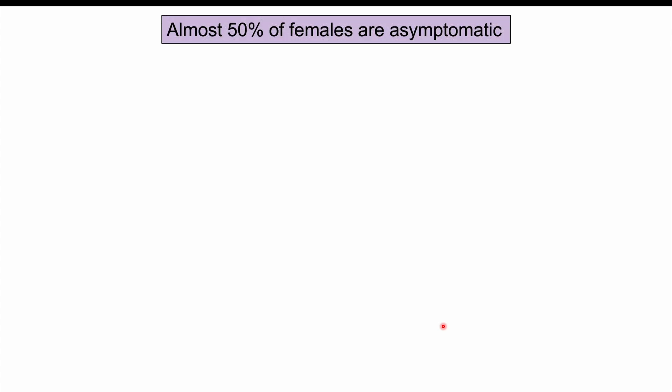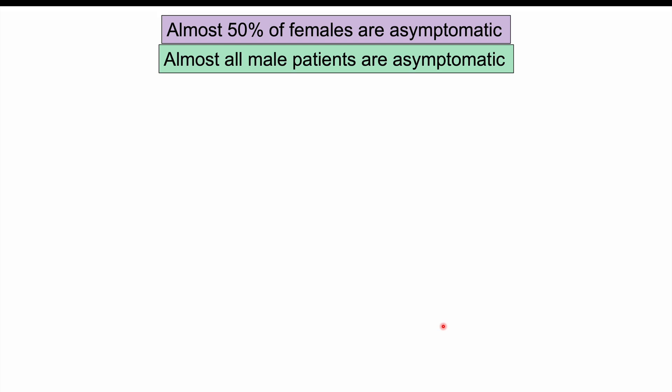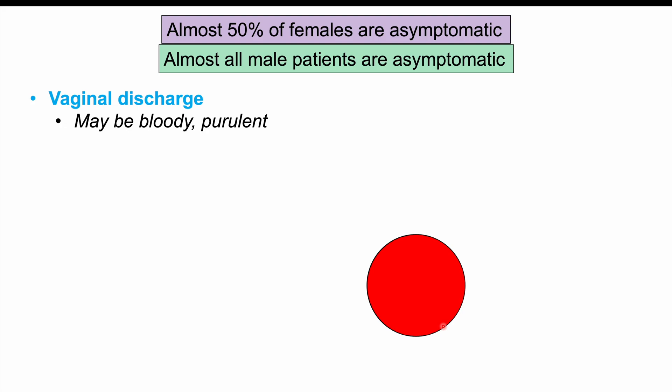Almost 50% of females are going to be asymptomatic — even if infected, they won't have any signs or symptoms. In male patients, almost all are going to be asymptomatic. When there are symptoms, vaginal discharge is the most common, and it may be bloody or purulent, since the organisms damage epithelial cells in the vagina and can cause bleeding, with some pus mixed in as well.